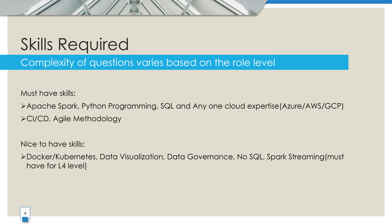Apart from the must-have skills, there are also nice-to-have skills. This includes Docker, Kubernetes, data virtualization, data governance, NoSQL, and Spark Streaming. Spark Streaming is optional for most roles, but if you are applying for a lead role, then it becomes a must-have skill. So in summary, no matter which role you are applying for, you should be strong in Spark, Python, SQL, and Cloud. The difficulty of the questions will scale up with the role, but these skills remain the core of your preparation.